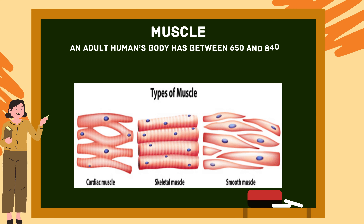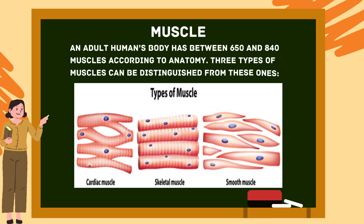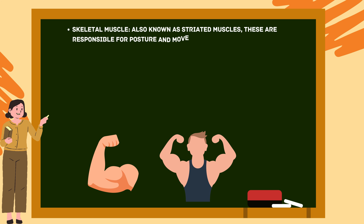An adult human body has between 650 and 840 muscles. Three types of muscles can be distinguished: skeletal muscle, also known as striated muscles, which are responsible for posture and movement.